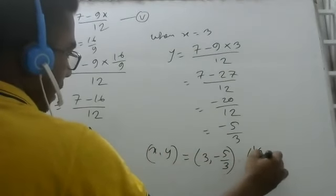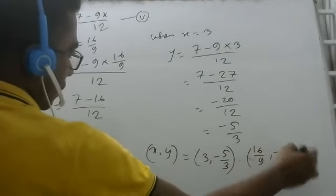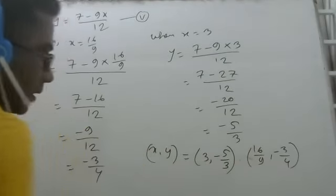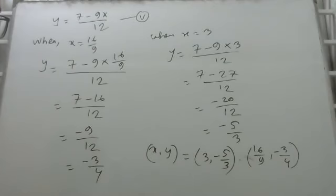So x equals 16 by 9, y equals minus 3 by 4. And x equals 3, y equals minus 5 by 3 — these are our required solutions of this math.